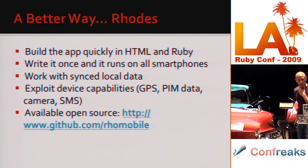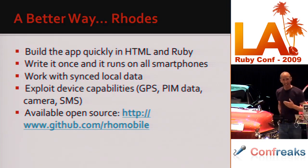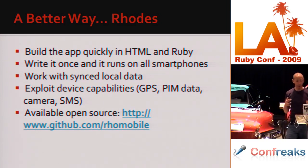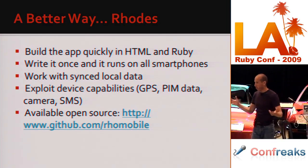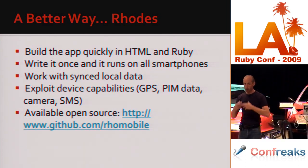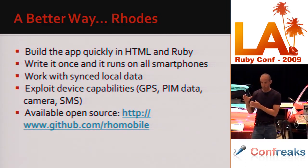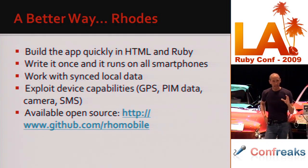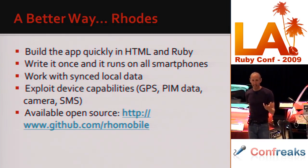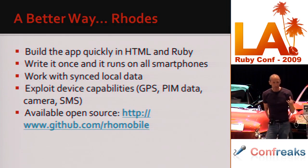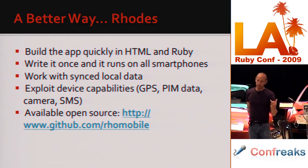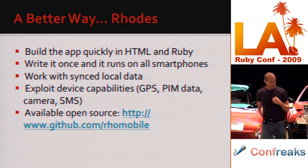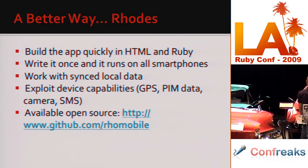What we built is a framework called Rhodes. It allows you to build apps quickly in HTML and Ruby. It's a model-view-controller framework, very similar to Rails. We love Rails — our sync server is written in Rails — but Rails is between one and two orders of magnitude too big if you're on the device. So Rhodes is sort of a bad pun: it's like Rails, but it grows more places.